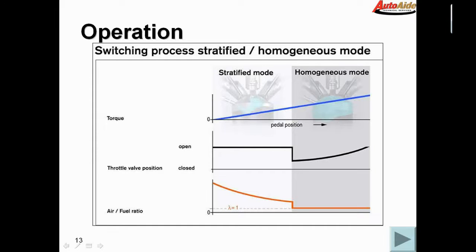If you take a look at the homogeneous mode, the gray area to the right of the graph, as soon as torque hits a certain limit, the throttle will go back to following the driver's foot. We see the air-fuel ratio drop down to lambda 1 or 14.7. So the car will, depending on load, temperature, and RPM, switch back and forth between the two modes.